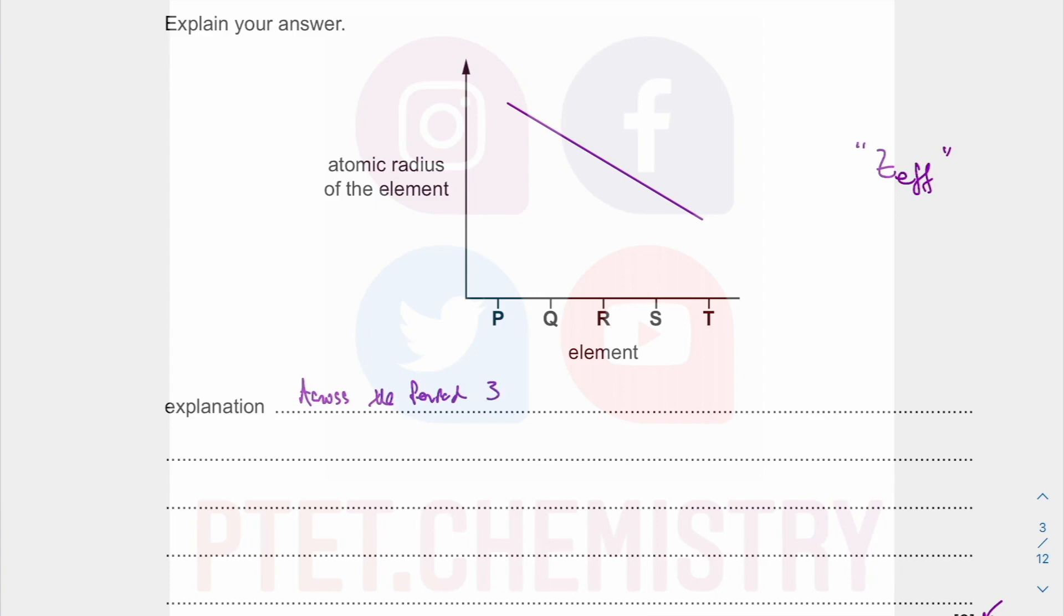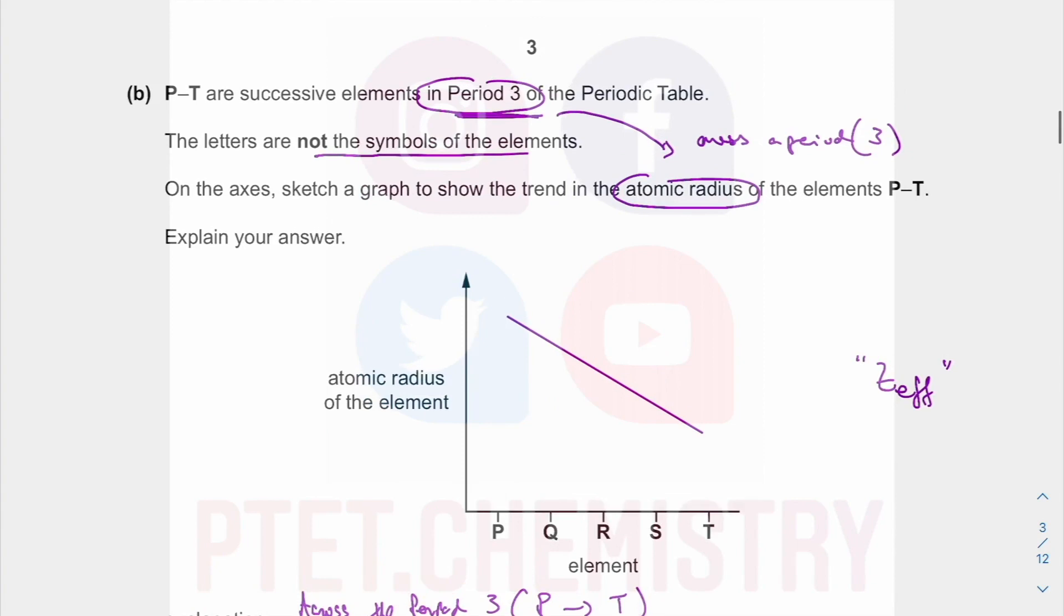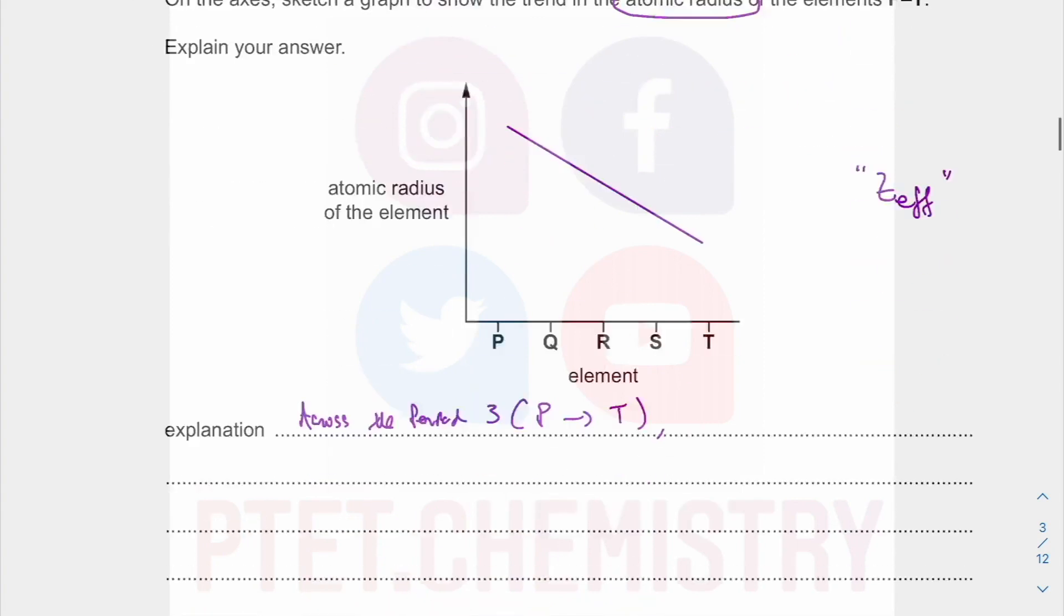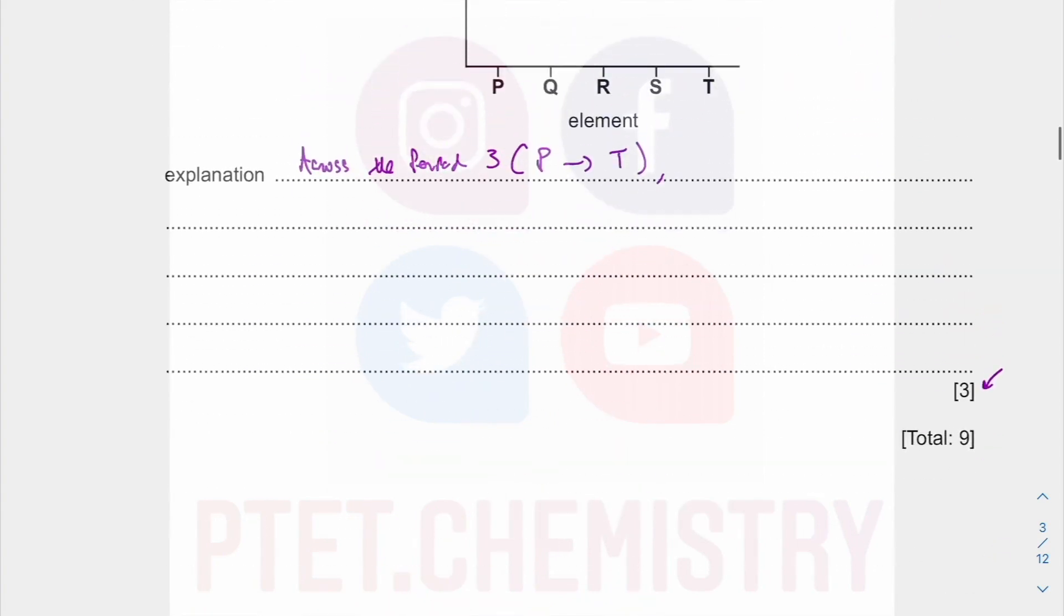So across the period 3, i.e. from P to T, successive elements, if you read the question, successive elements in period 3. That's why you need to read the question first. The number of protons increases. So we can say the nuclear charge, meaning to say the charge due to the protons, which is just capital Z, increases.